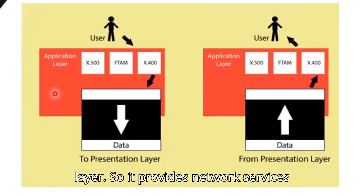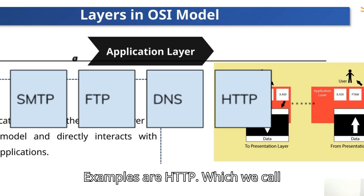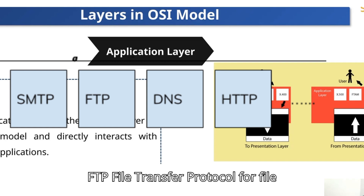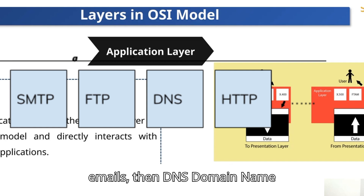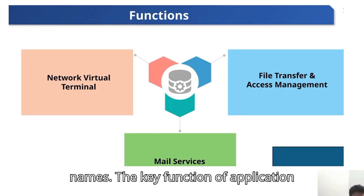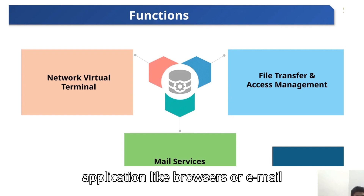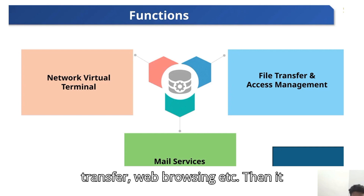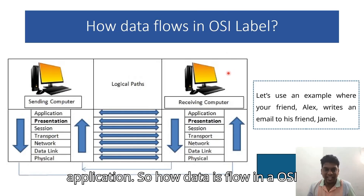The Application layer provides network services directly to users. Examples include HTTP (Hypertext Transfer Protocol) for web browsing, FTP (File Transfer Protocol) for file transfers, SMTP (Simple Mail Transfer Protocol) for sending emails, and DNS (Domain Name System) for resolving domain names. Key functions: interfacing directly with end-user applications like browsers or email clients, providing protocols for specific functions such as file transfer and web browsing, and handling network resource allocation for applications.